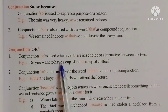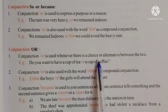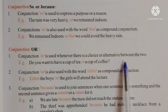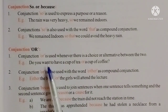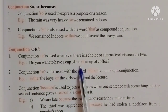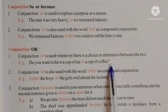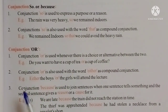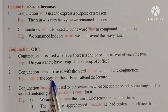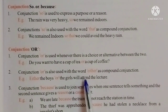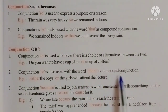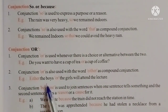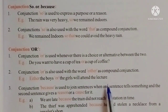Conjunction 'or' is used whenever there is a choice or alternative between two things. Example: Do you want to have a cup of tea or a cup of coffee? 'Or' is also used as a compound conjunction with 'either': Either the boys or the girls will attend the lecture.